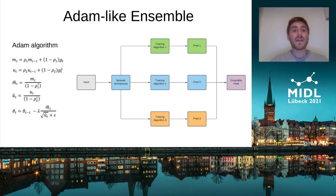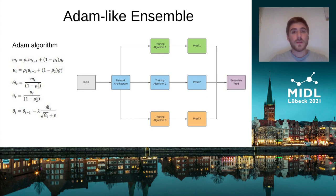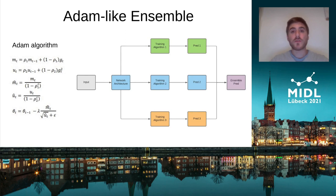The Adam algorithm is summarized on the left of this slide. It is based on two different quantities, m_t and v_t, which are respectively the moving average of the gradient and the moving average of the square of the gradient.